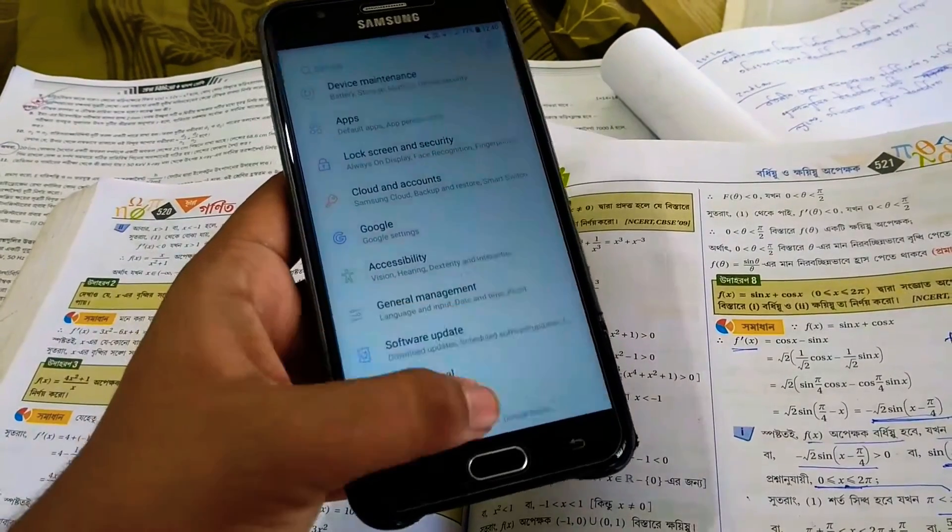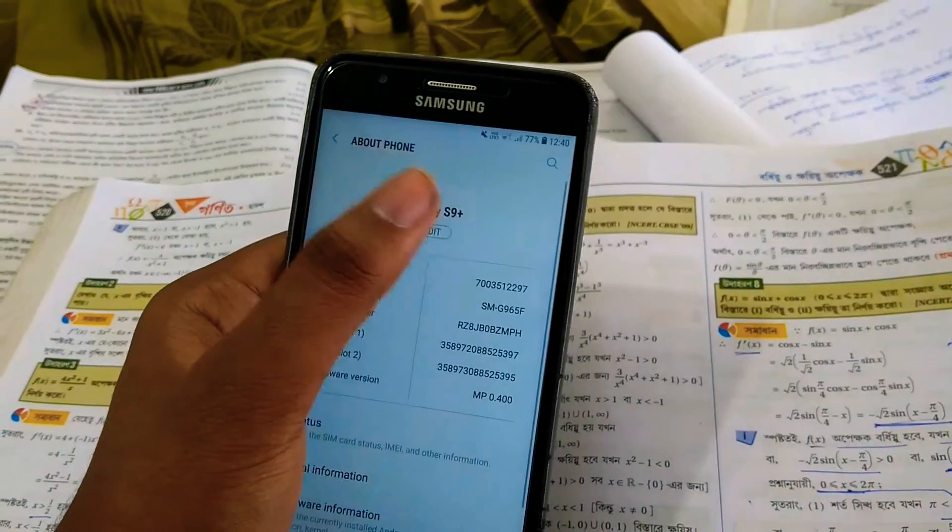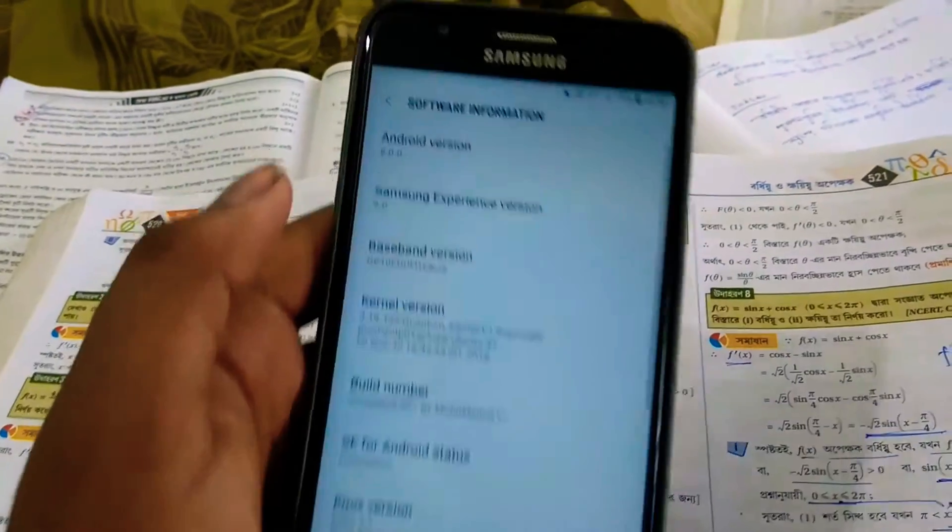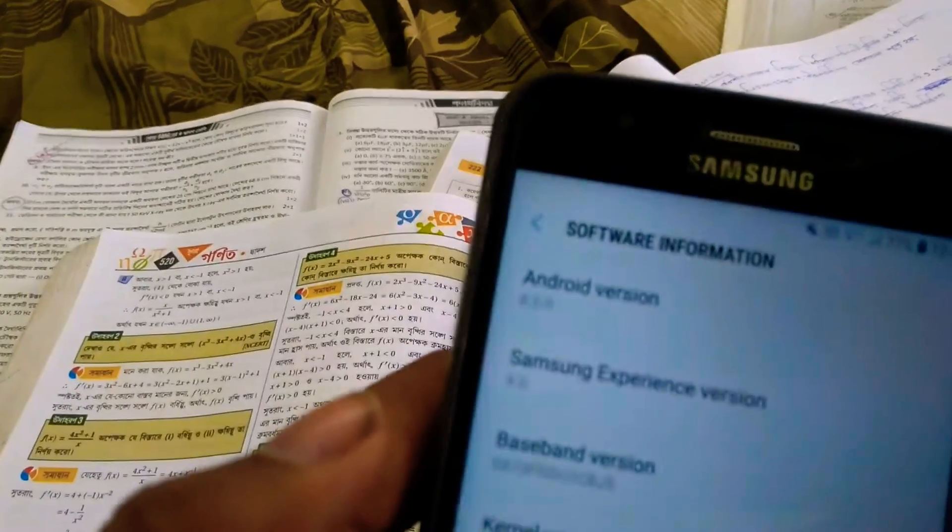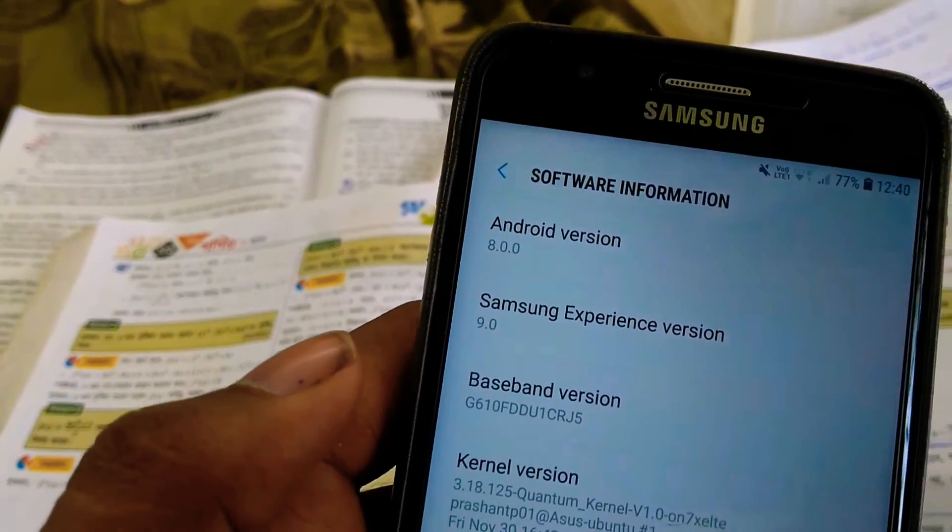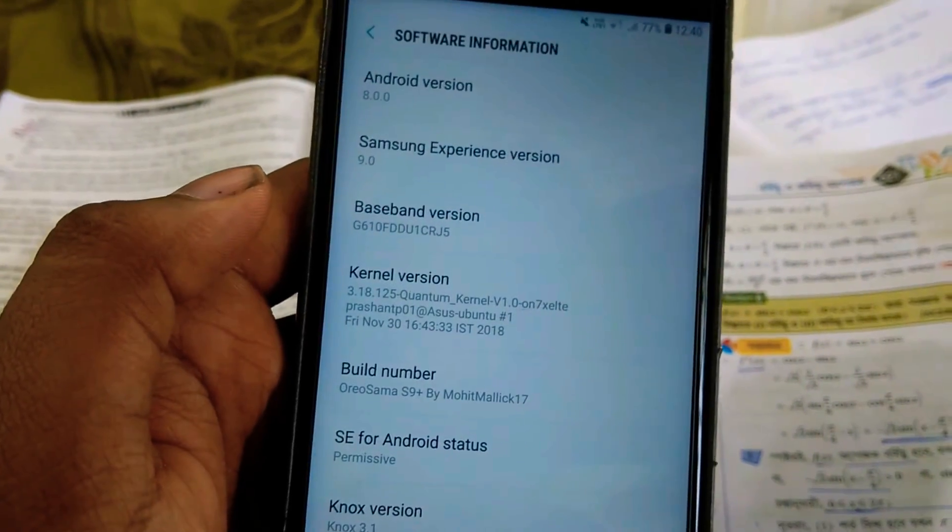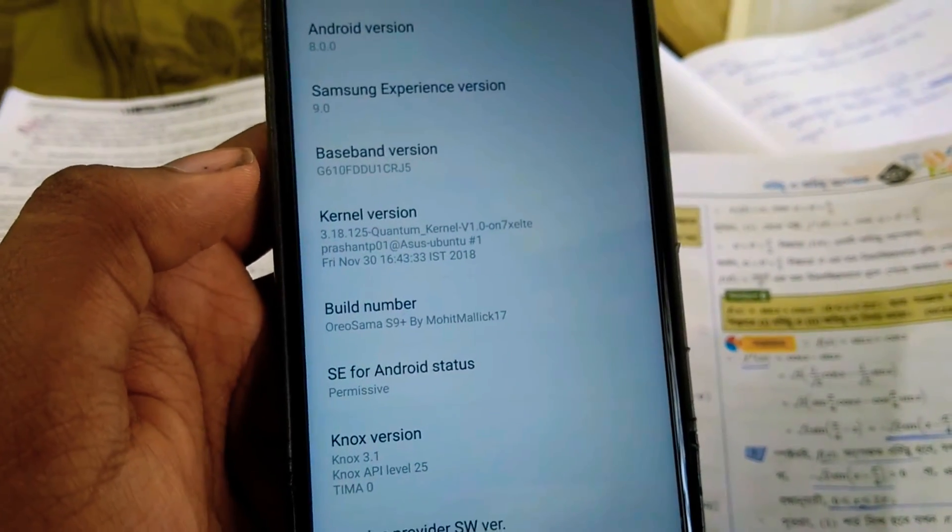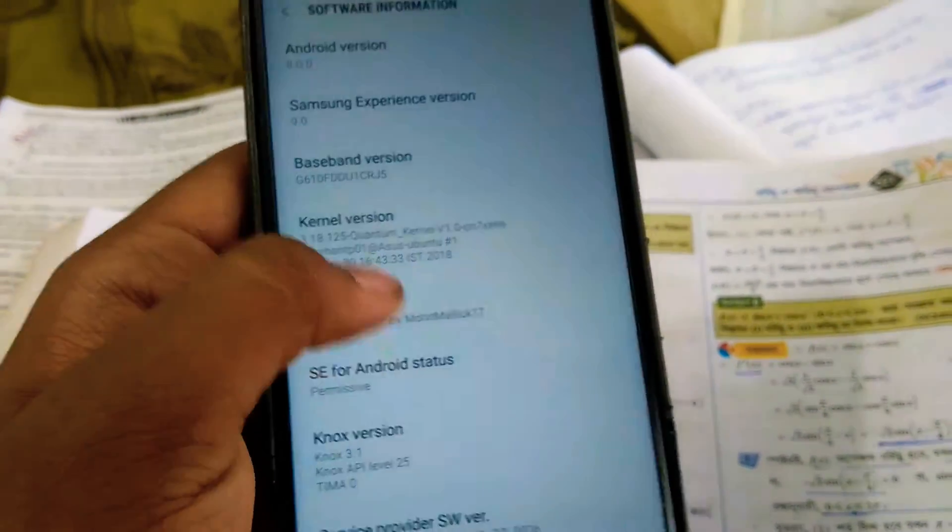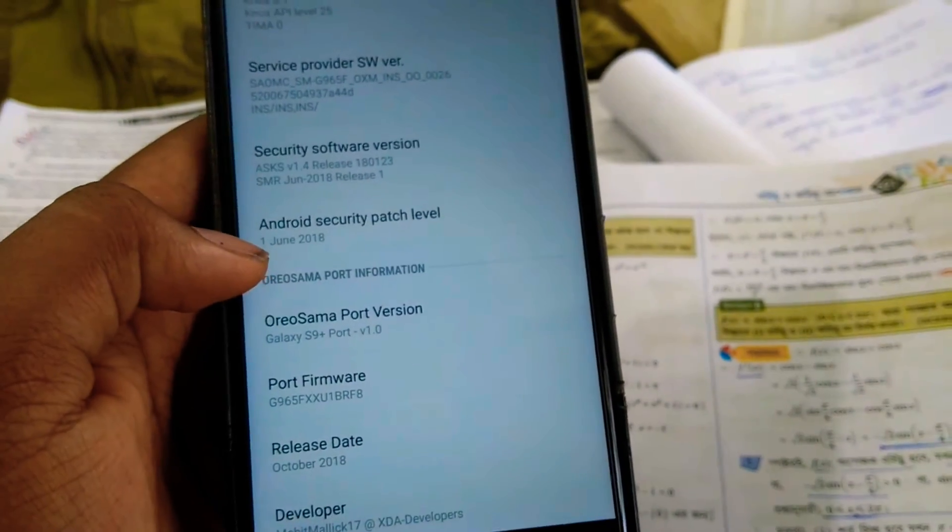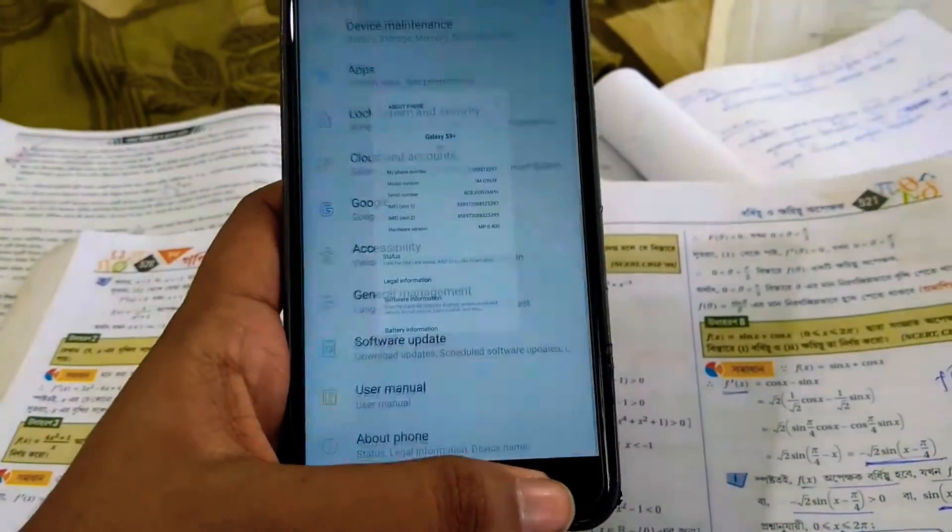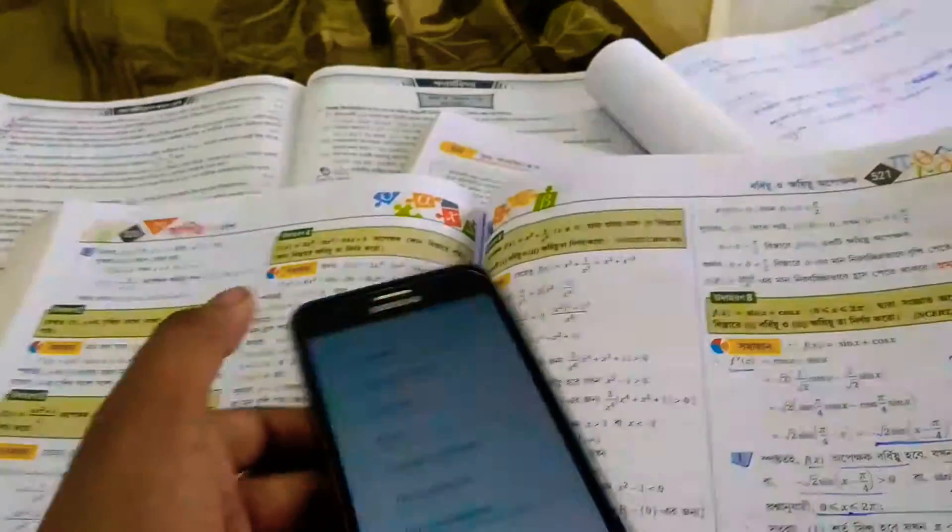About phone shows Galaxy J7 Plus—even this model number is from there. If you go to software information, it's running Android 8.1.0, Samsung Experience 9.0. The kernel is by default Quantum kernel and the build tab is Oreo Sama S9 by MohitMalik17—thanks to the developer for this good quality ROM. The patch is on the first zone, that's pretty old. As it's a custom ported ROM, no update I would say, but that's just fine for me.